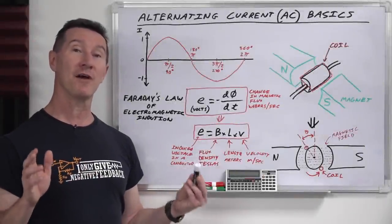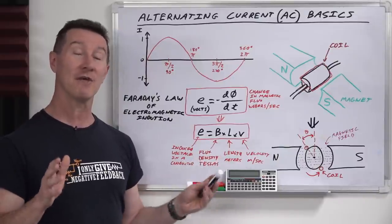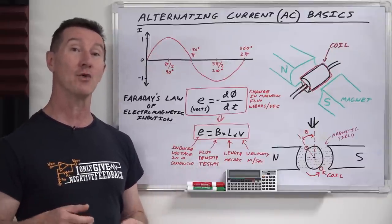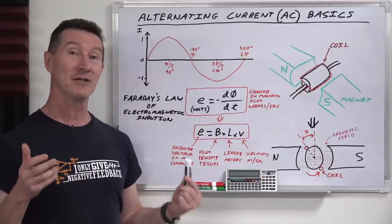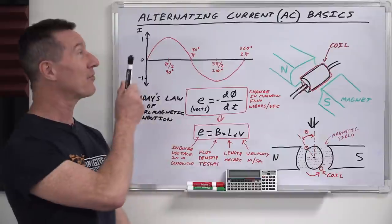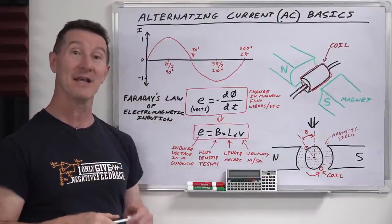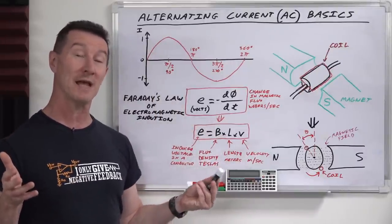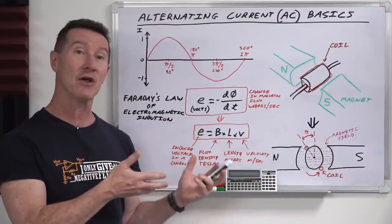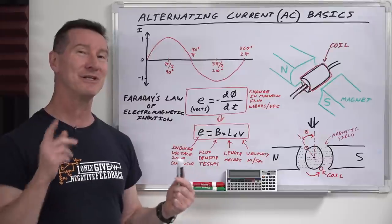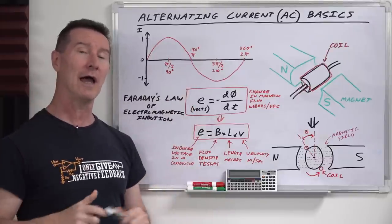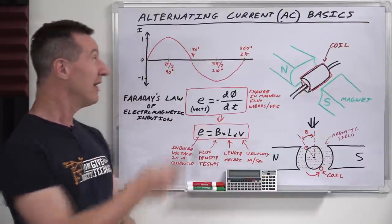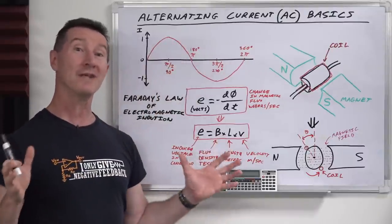In the previous series we took a look at DC circuit fundamentals - quite a few videos covering lots of stuff including inductors, capacitors, and transient circuit analysis. A lot of people might have thought that was AC circuit theory, but it's not - it's DC transient circuit theory. Today we're going to do an akka-dakka and look at alternating current basics, moving on to AC circuit theory.